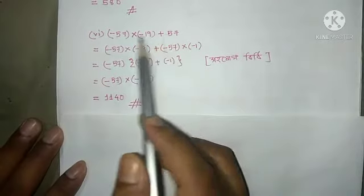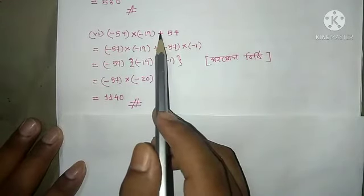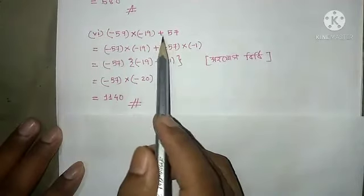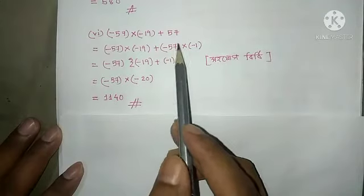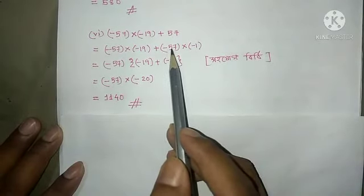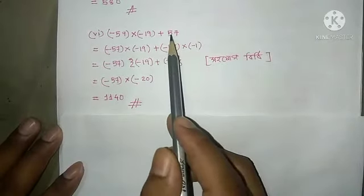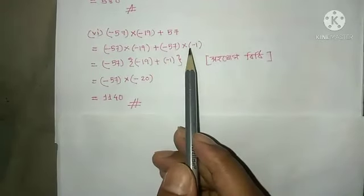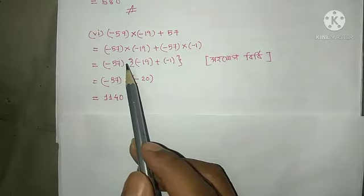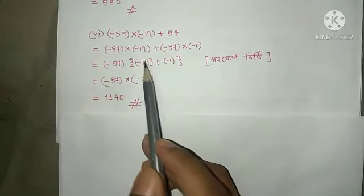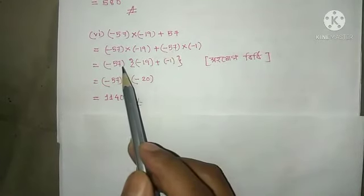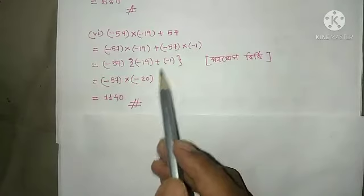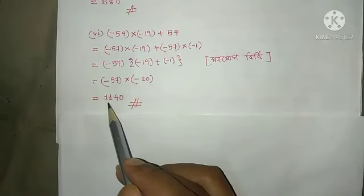Number four: minus 57 into minus 19. We write minus 19 as minus 20 plus 1, so minus 57 into minus 20 plus minus 57 into minus 1. Taking minus 57 common: minus 57 into minus 20 gives 1140. The final answer is 1140, as minus times minus is plus.